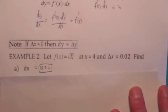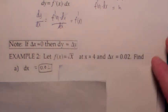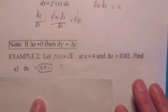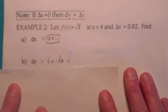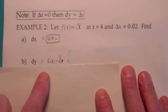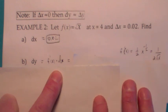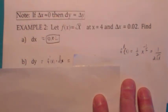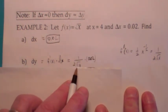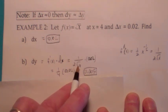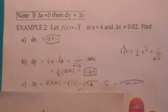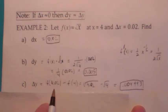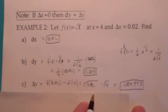Suppose f of x is the square root of x, and at x equals 4, delta x is 0.02. First, find dx — dx equals delta x, so dx is 0.02. Next, find dy. The differential dy equals f prime of x times dx, and f prime of x is 1 over 2 square root of x. Plugging in at x equals 4: 1 over 2 times square root of 4 gives 1 fourth. Multiplying by 0.02 gives dy equals 0.005. That's the change along the tangent line. Compare that with the actual change in the function, delta y, which is f of 4.02 minus f of 4. Plugging in and subtracting gives 0.004993. Notice they're very close together.